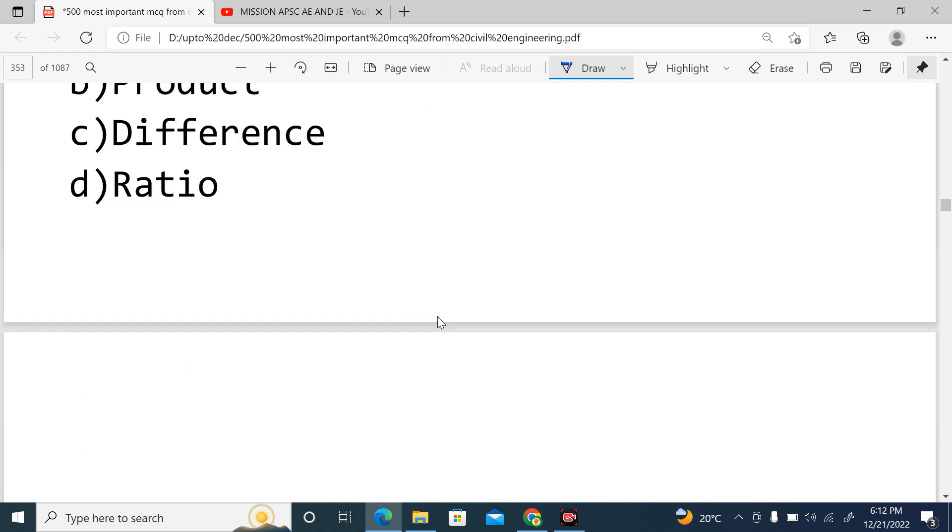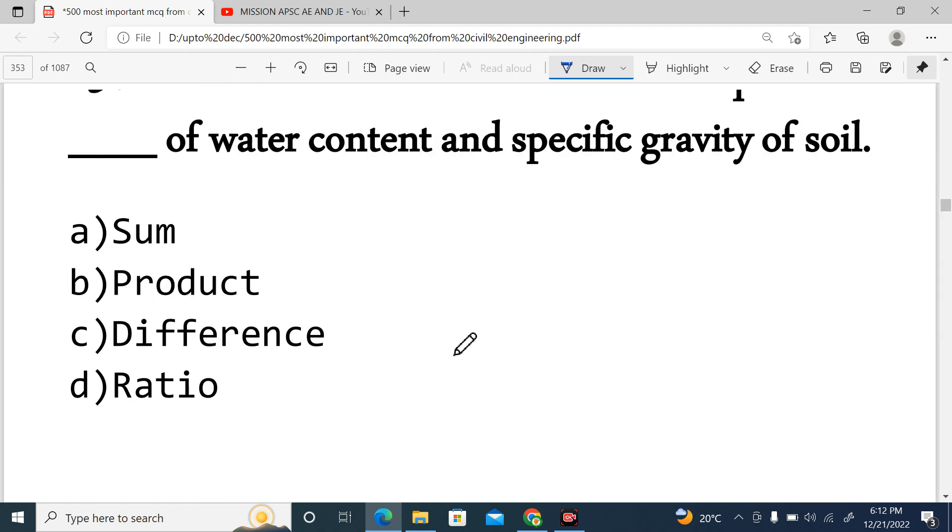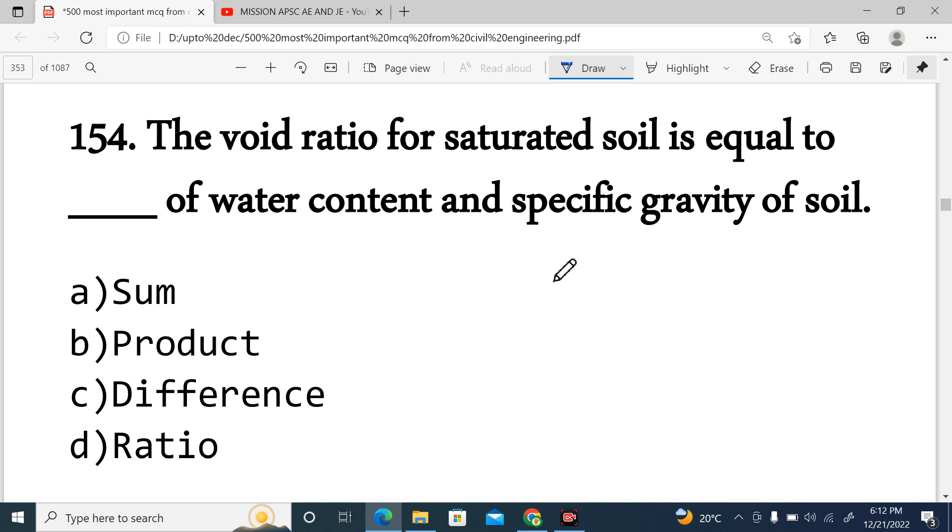Next, Question Number 153: Maximum allowable limit up to that the measurement may vary from the true value is known as permissible error, residual error, expected error, or achievable error. The correct answer is permissible error, option A. So the maximum allowable limit that we can cross, that limit is basically a permissible error.